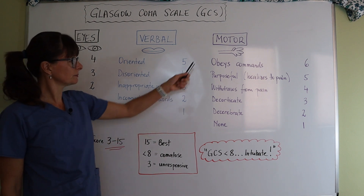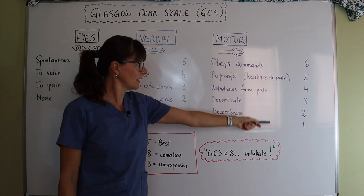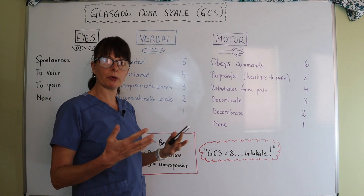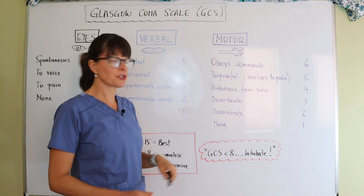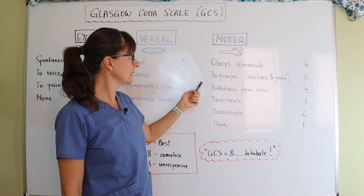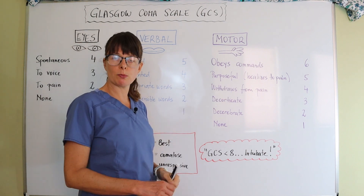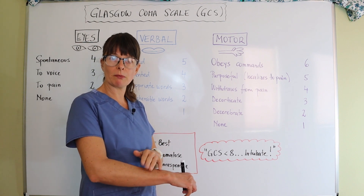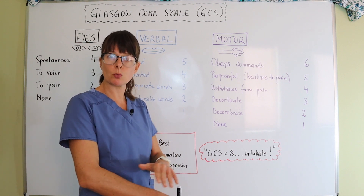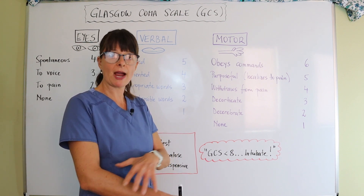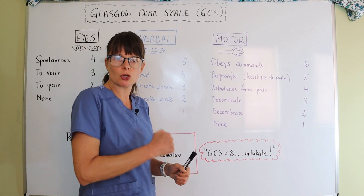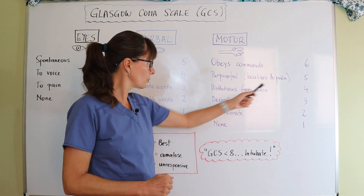For motor response, we have six different numbers we can assign the patient. If they obey commands — squeeze my fingers, open your eyes, smile — those kinds of neurologic exam commands — they get a score of six. If they have purposeful movement, meaning they localize to pain — for example, you tap them on their arm and they try to move your hand away — meaning they can localize where that touch happened, that would be a score of five. If they withdraw from pain, meaning they just jerk away from you, that would be a score of four.